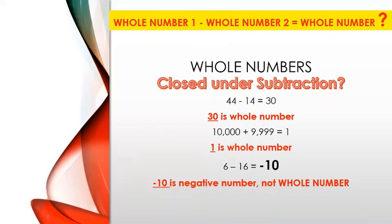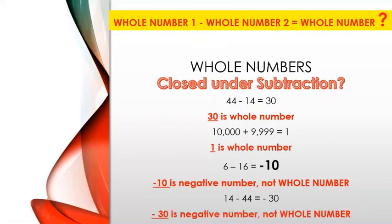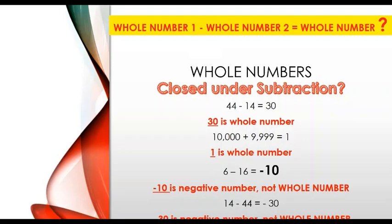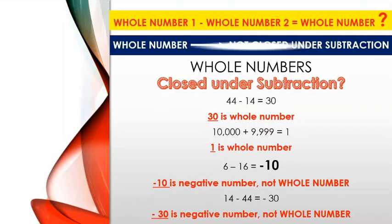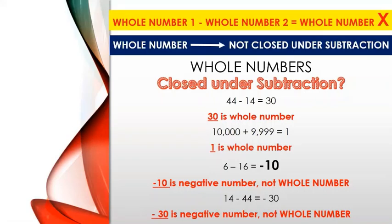Similarly, if we subtract 44 from 14, we get minus 30, which is a negative number — not a whole number. We consider this operation invalid. Hence, we can say that whole numbers are not closed under subtraction.